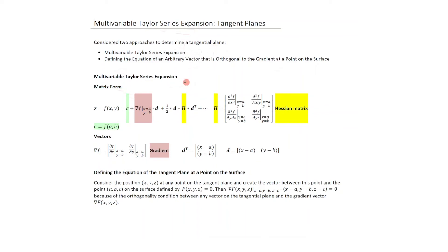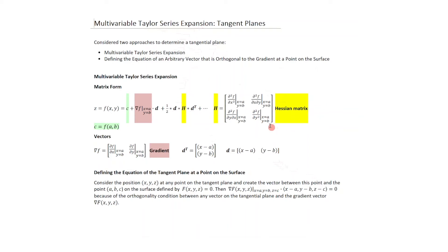For the multivariable Taylor series expansion approach, we expand the function in matrix form: C evaluated at (A, B), plus the gradient vector dotted with the difference vector D = [X−A, Y−B], plus a second-order term involving the Hessian matrix. The Hessian is relevant for determining minima and maxima of two-variable functions.